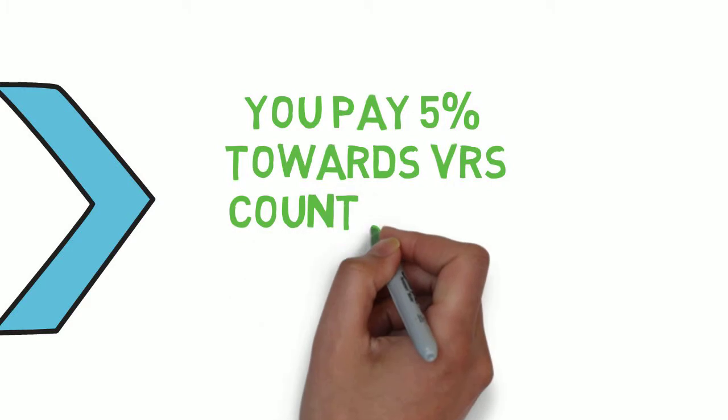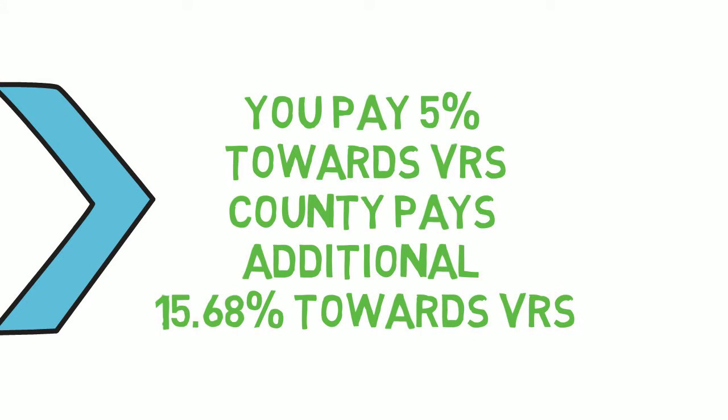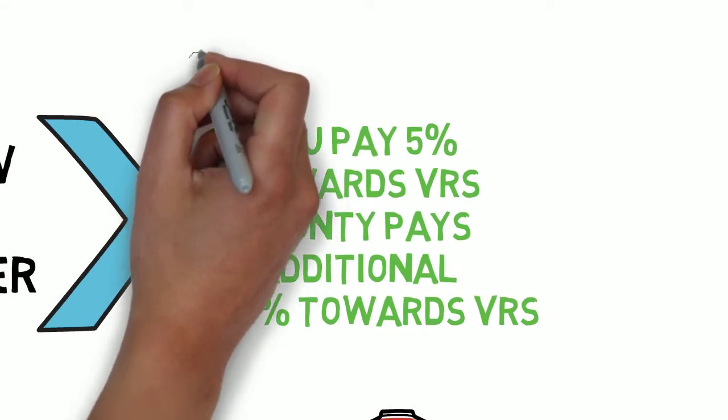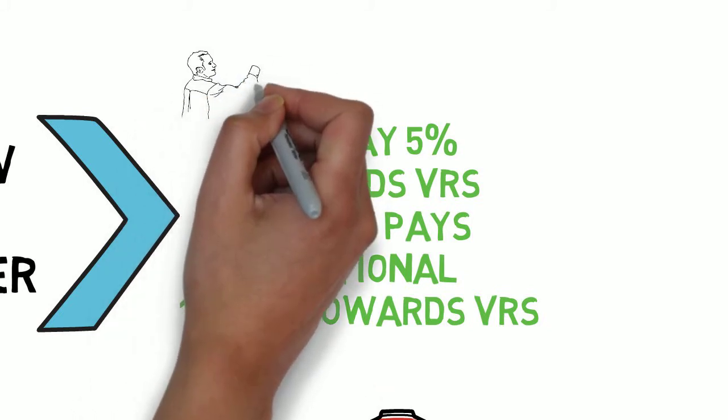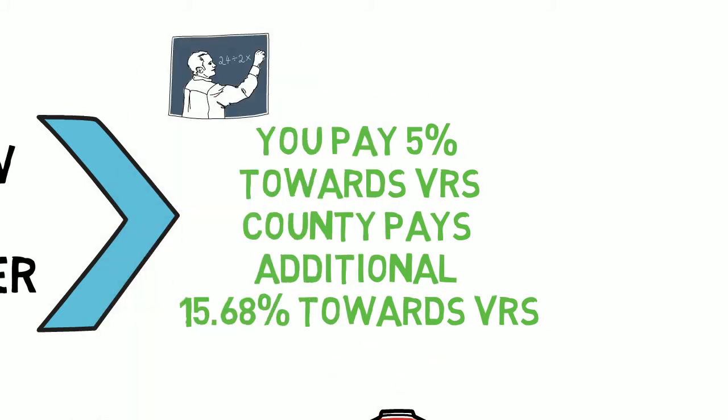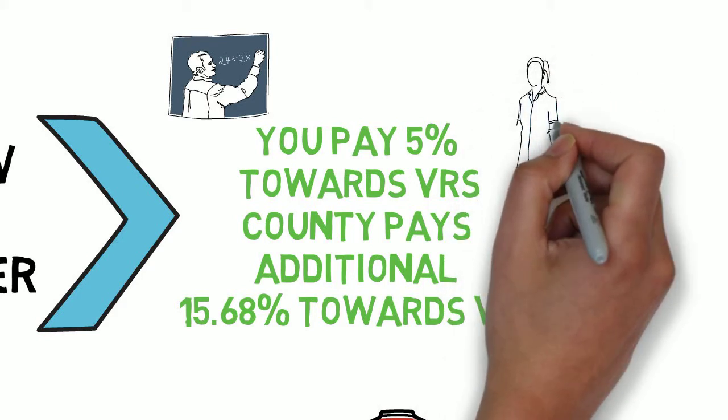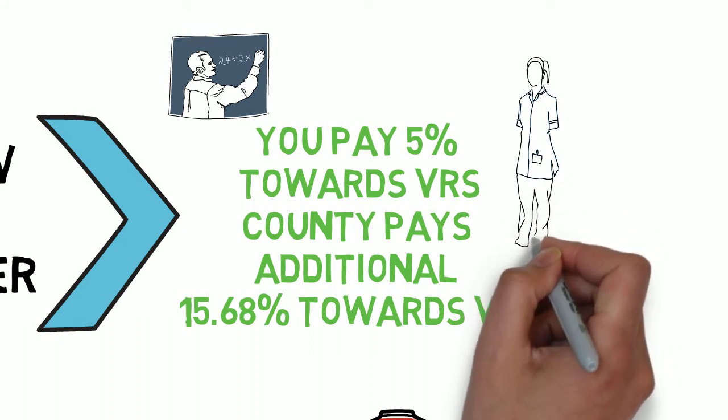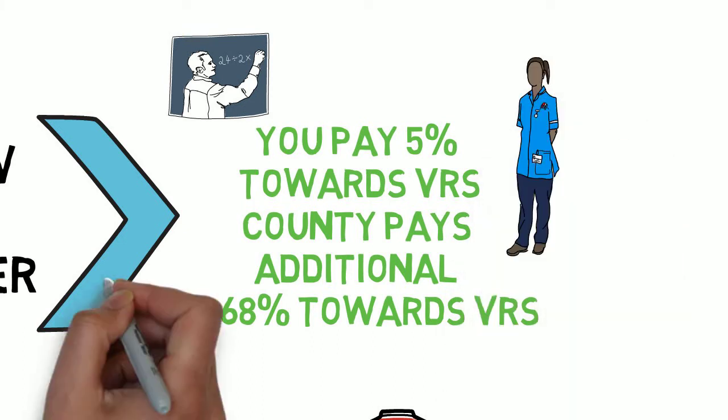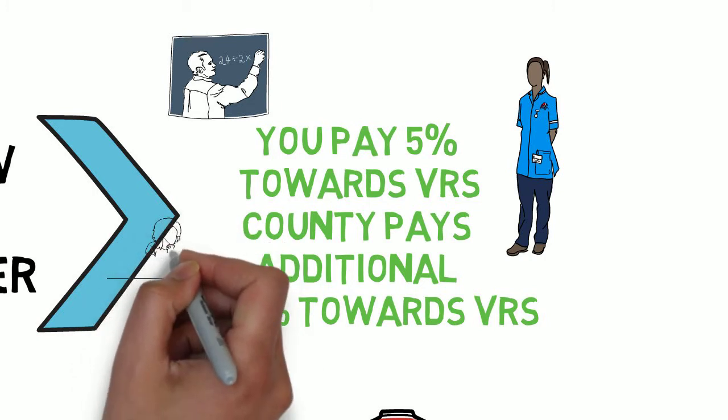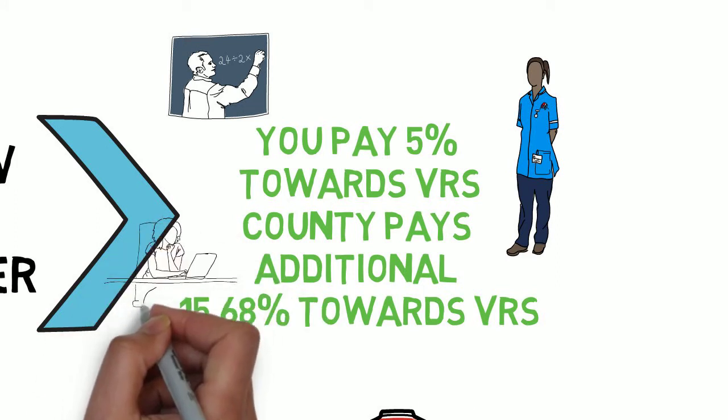As your employer, Rockingham County contributes 15.68% monthly to VRS on behalf of employees that are teachers, principals, assistants, nurses, clerical staff. And even other employees are still getting a large additional contribution towards their retirement. These monies are invested by VRS and then once you retire, they use that money of yours that they invested to pay for your pension as long as you're collecting.